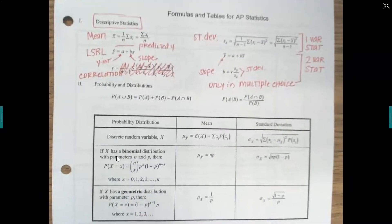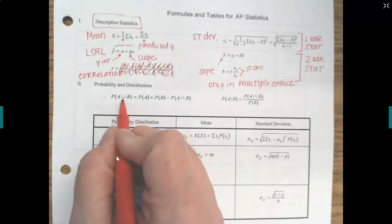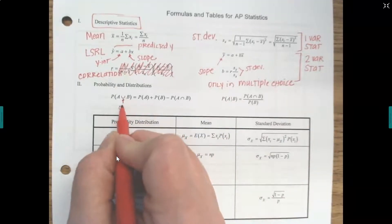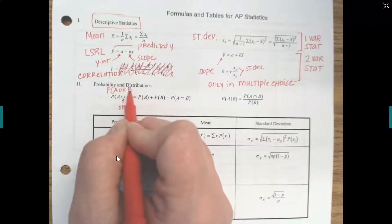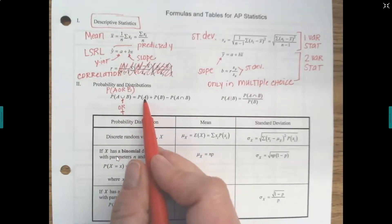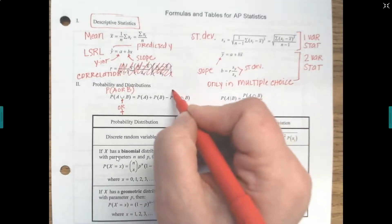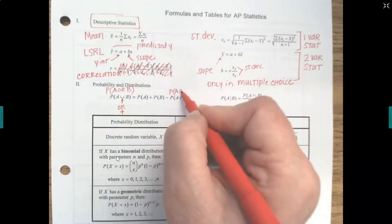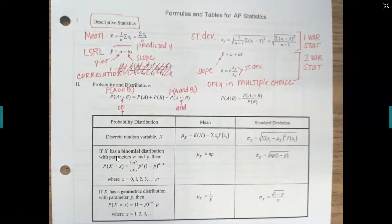Next we moved into probability and distributions. There are some notations here that might differ from what we used in class. The OR notation represents the probability of A or B. When looking for A or B, you add them together: P(A) + P(B). But if they overlap — where A and B occur at the same time — you subtract P(A and B), because otherwise you're counting that overlap twice.